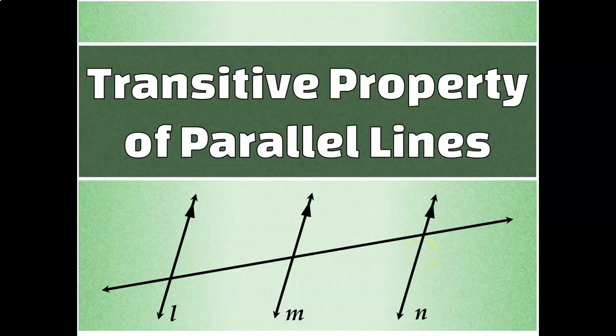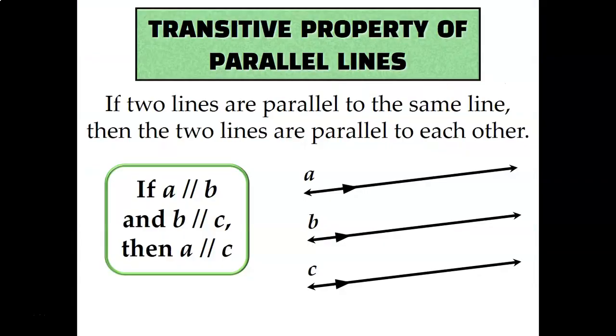Let's talk about the transitive property of parallel lines, which is a way for us to describe the relationship between the angles created by multiple parallel lines. The transitive property of parallel lines states that if two lines are parallel to the same line, then those two lines are parallel to each other.